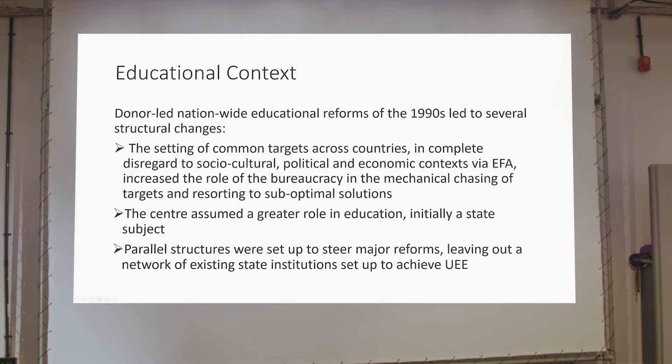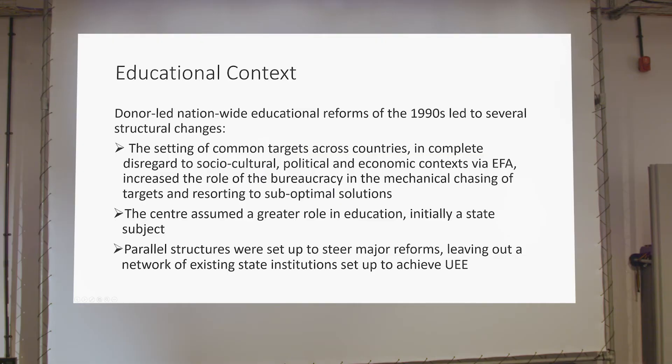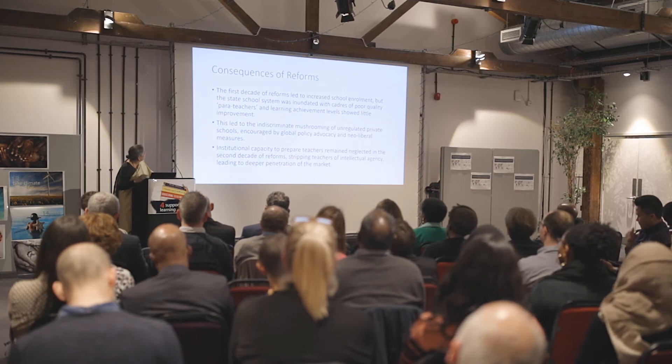Donor-led reforms actually led to major structural changes and these have created problems for us now. The common targets of the Millennium Development Goals and the EFA movement were set across contexts without looking at social or cultural context, and the result was that bureaucracy came in just to chase targets, and therefore sub-optimal solutions became the norm. The central government assumed a much greater role — initially education was a state subject, but it became concurrent, which meant controls of the center became far stronger. Parallel structures were set up, causing a dismantling of the existing structures which were not involved in the reforms.